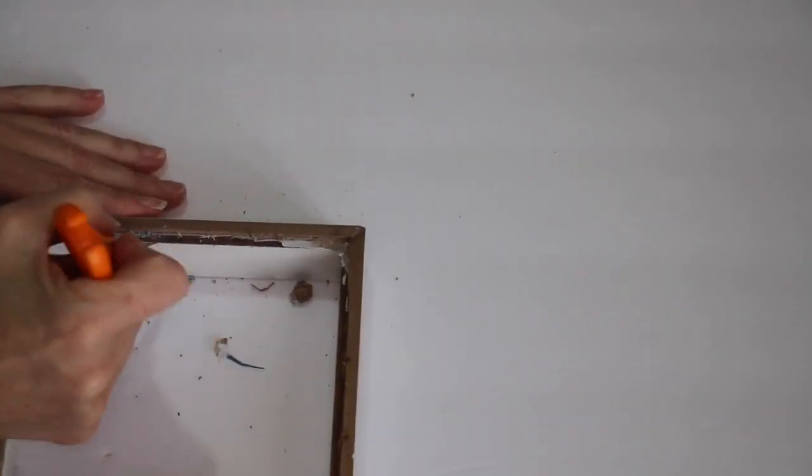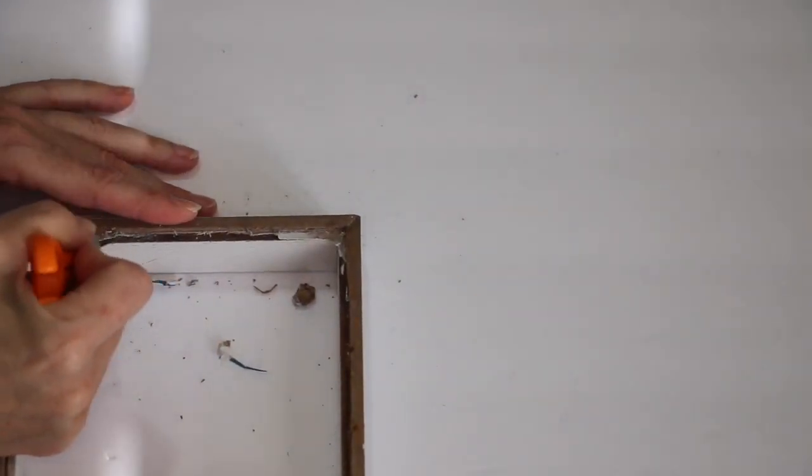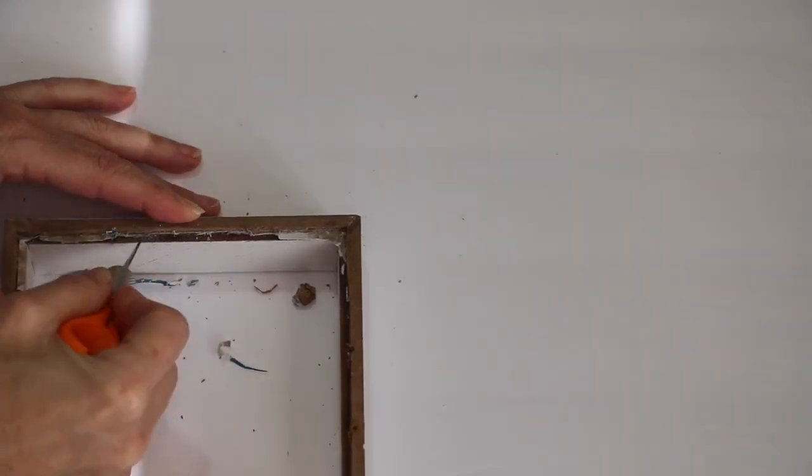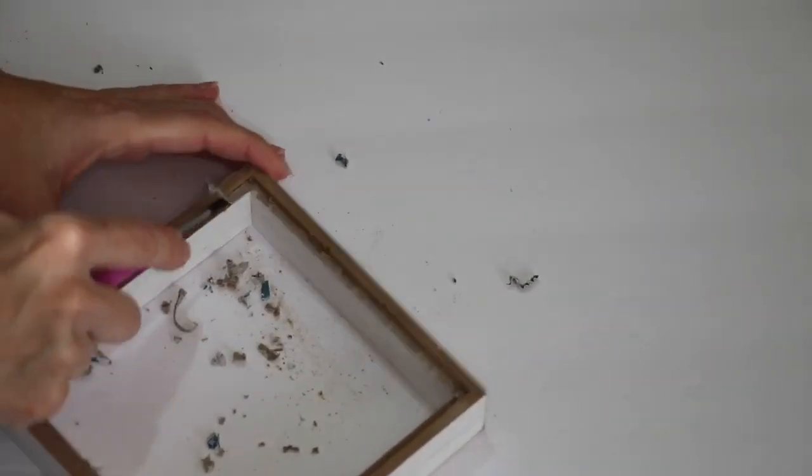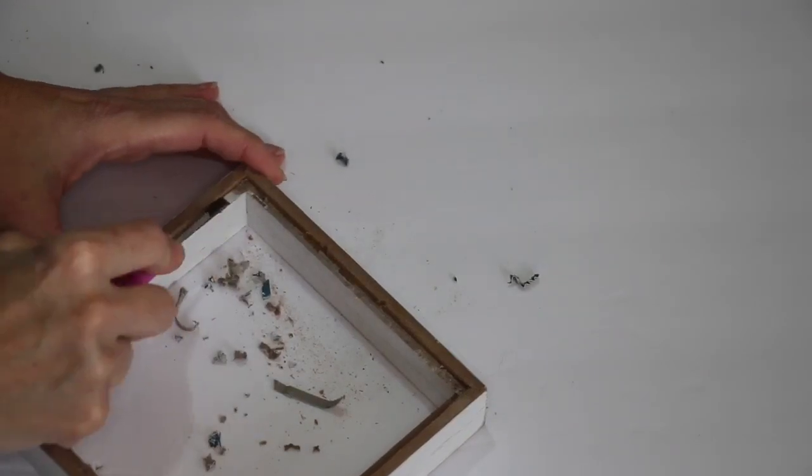You don't have to be perfect about this, but you do want to remove as much as you can because we will be painting the back side of this. In my case, this is sitting on my table outside and you can see my table from inside, and so I really want this to have a 360 view.